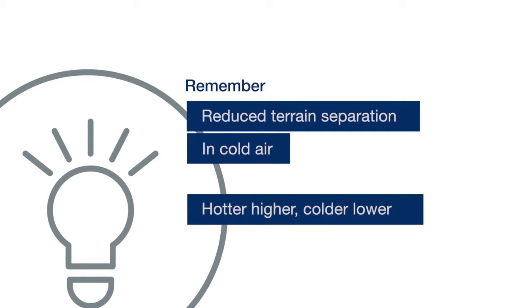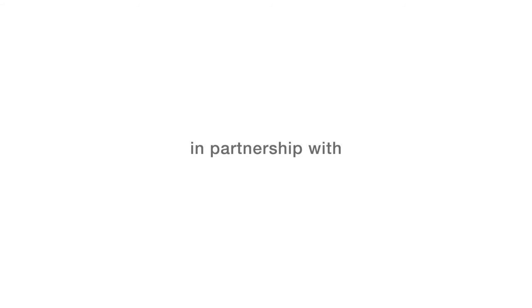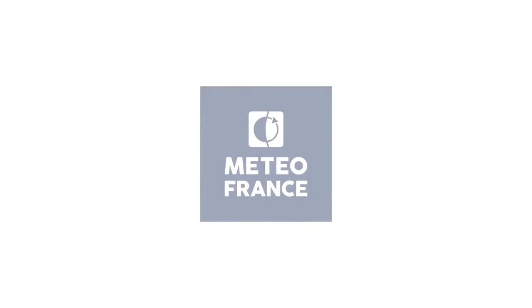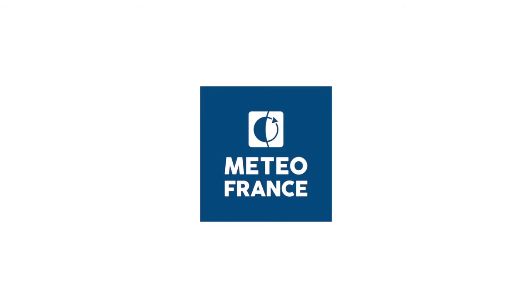Is the amount of oxygen in the atmosphere decreasing? A study found that over the past 800,000 years, the amount of oxygen found in the atmosphere has decreased by 0.7% and continues to decline. Fortunately, the 0.7% decrease is not something that has caused significant problems for life on Earth.